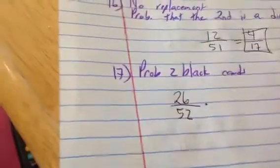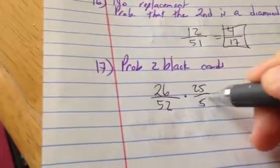You're not replacing the card, so when you go to pick again, there are only 25 black cards left out of 51.